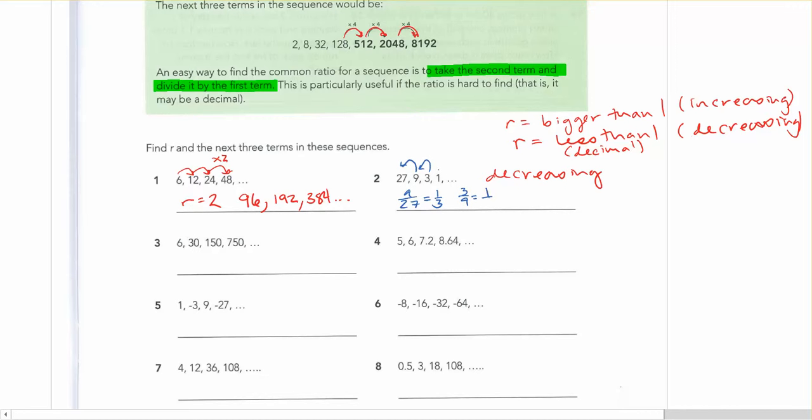And if you want to think about r being a fraction, you can just call it 1 third. Or you could use 0.33 recurring. But I would try to use the 1 third because it would be a more precise answer for you.